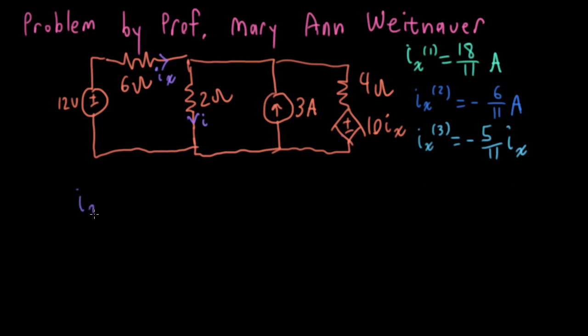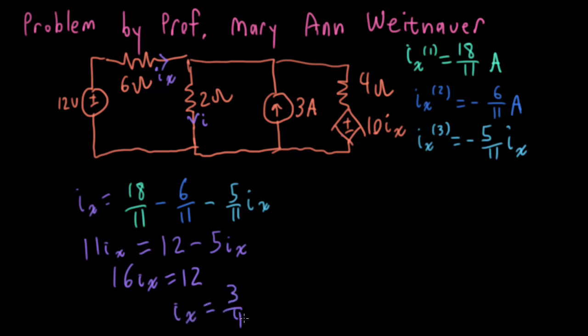Okay, so finally, what is IX? So IX is the superposition of these three terms. So I have 18 over 11 amps, and then I will subtract 6 over 11 amps, and then I subtract 5 over 11 IX. All right, so now the IX on the left is the same as the IX on the right. Let me multiply both sides by 11. So I'll write 11 IX is equal to 18 minus 6, which is 12, minus 5 IX. So I would then have 16 IX is equal to 12. So IX is equal to 12 over 16, which is 3 over 4 amps. So that's what the controlling current is.